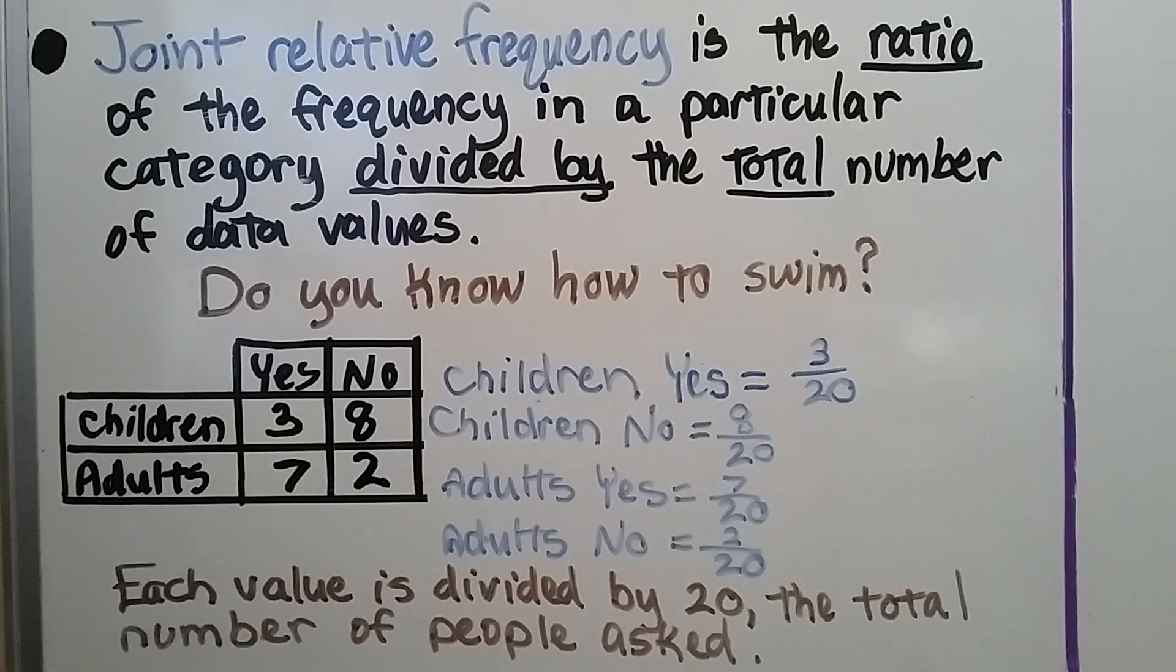Joint relative frequency is the ratio of the frequency in a particular category divided by the total number of data values.